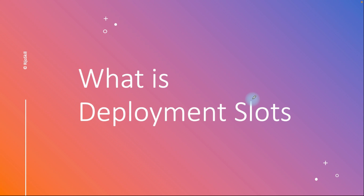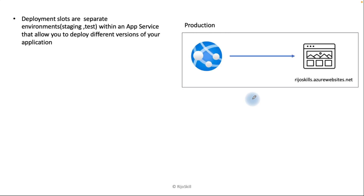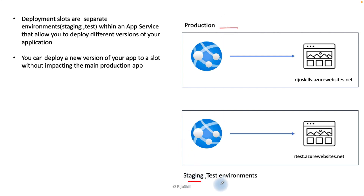Deployment slots are separate environments within the App Service that allow you to deploy a different version of your application. When you first deploy your application, the Azure portal App Service generates one slot called the production slot — that is the live slot. When you need to update this app service, you can deploy a new version of your app to a new slot without impacting the main production app. You can create a slot and make it like a staging or testing environment, and each slot has a different DNS name.